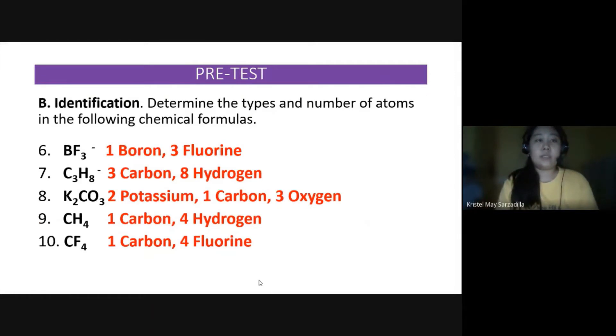Next, in BF3, there is one boron for every three fluorine. C3H8, there are three carbon atoms for every eight hydrogen atoms. K2CO3, there are two potassium atoms, one carbon and three oxygen atoms. CH4, one carbon atom for every four hydrogen atoms. And CF4, one carbon, four fluorine atoms.